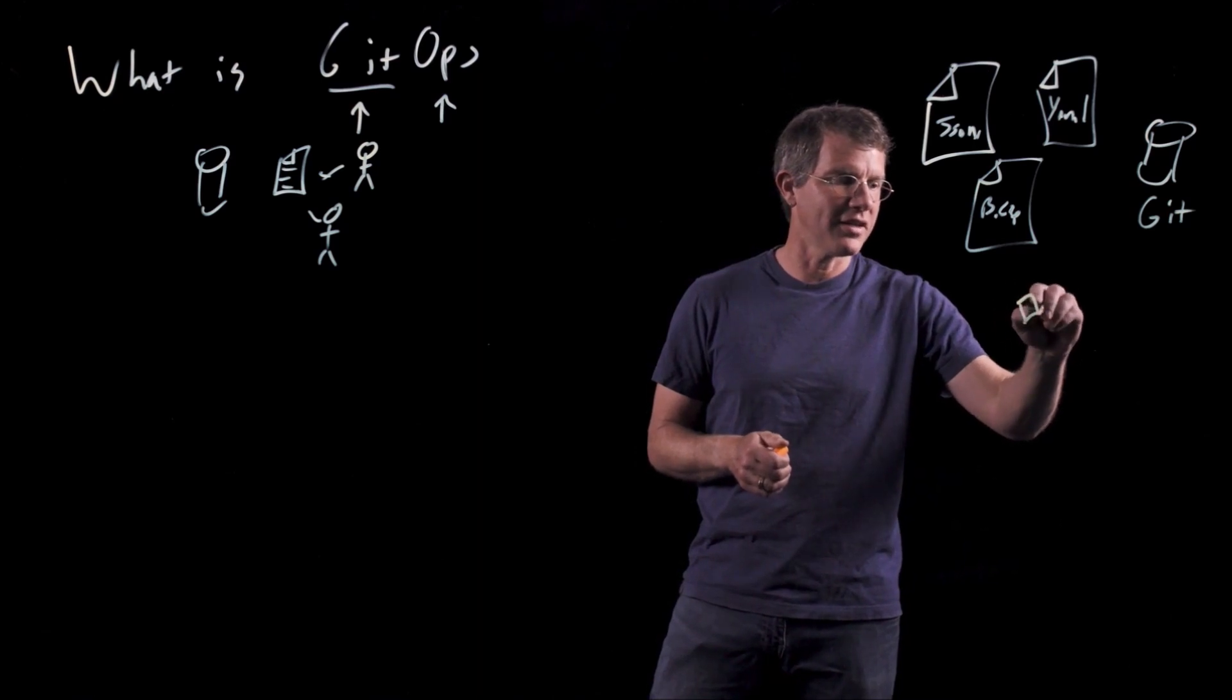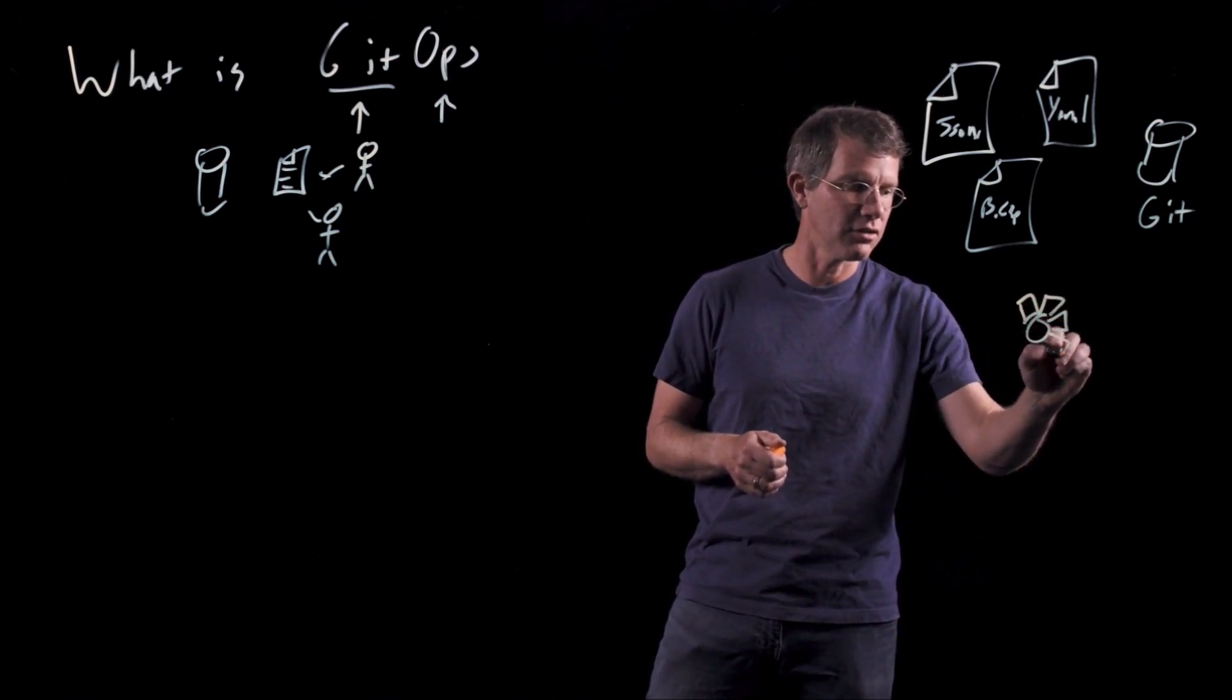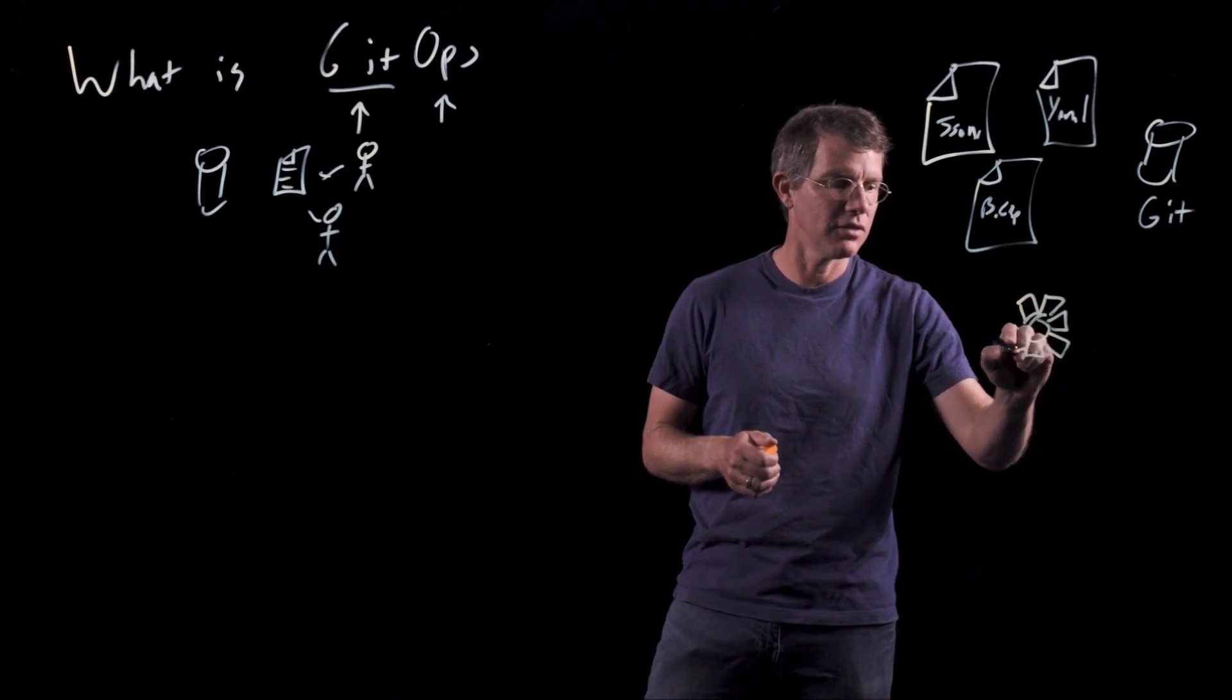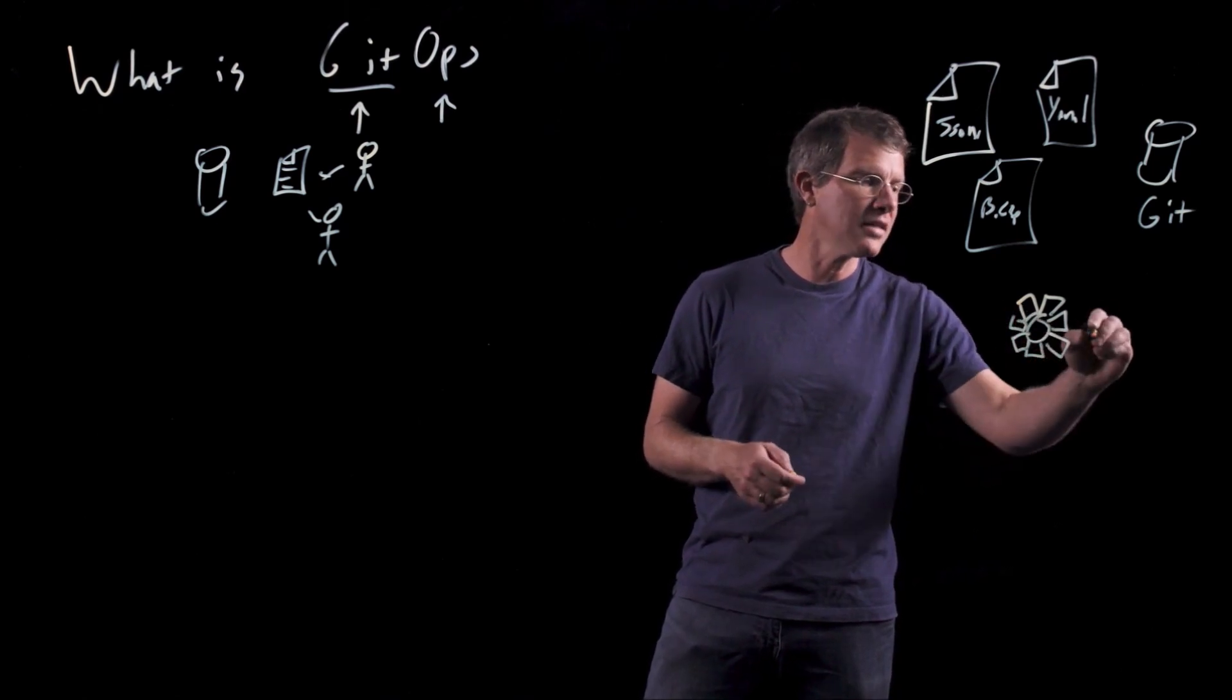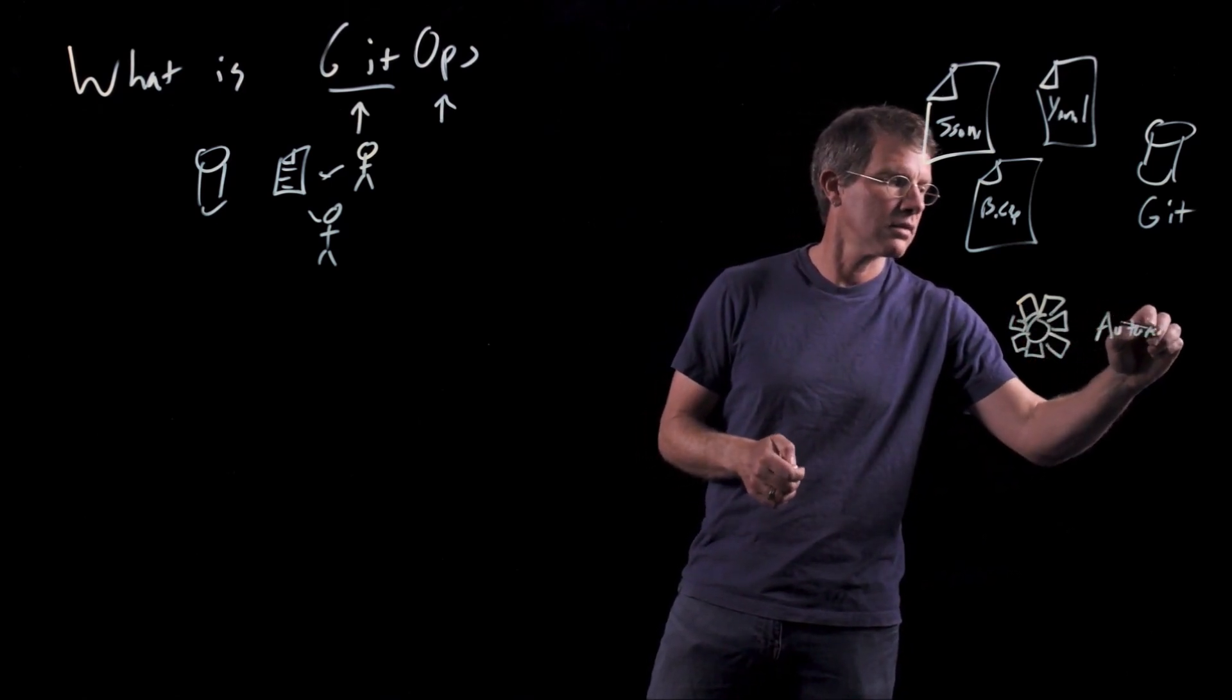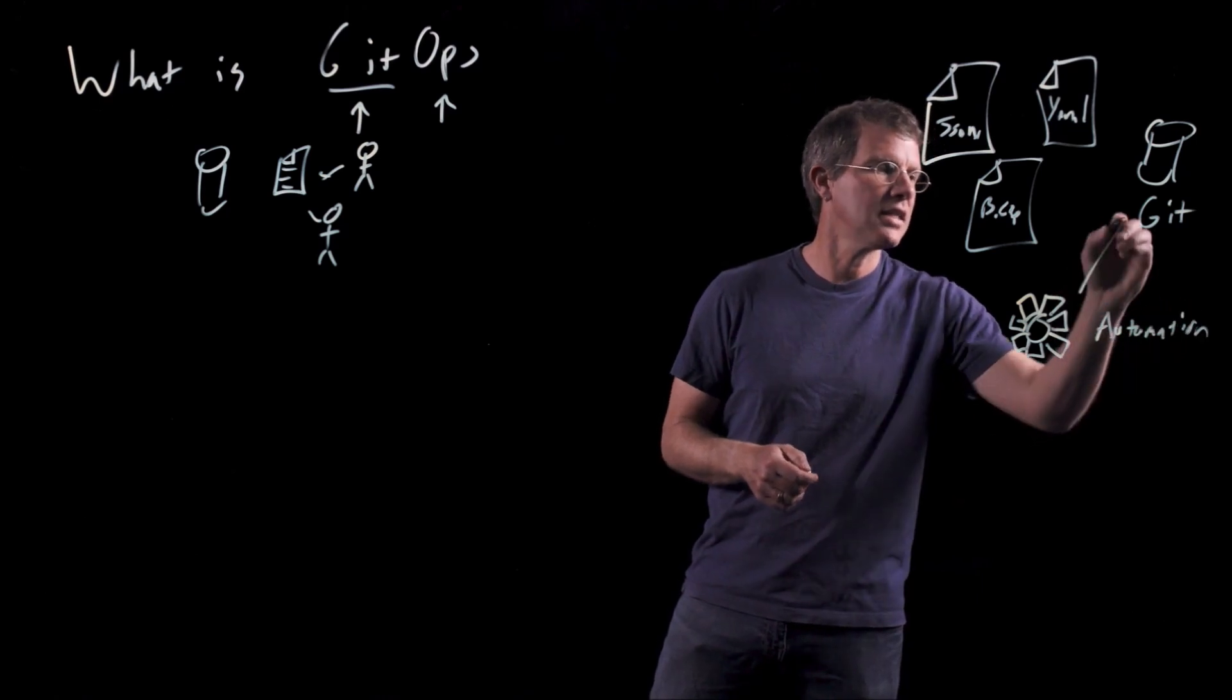I'll draw a little gear here to represent the automation. I apologize for my gear drawing skills. They definitely could use a little bit more practice. But you're going to add some automation connected to that Git repository.